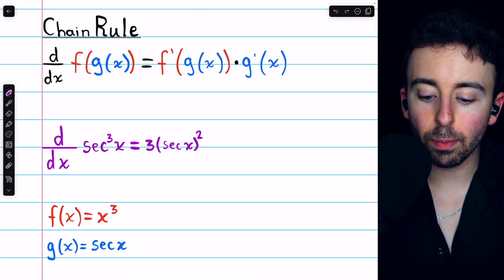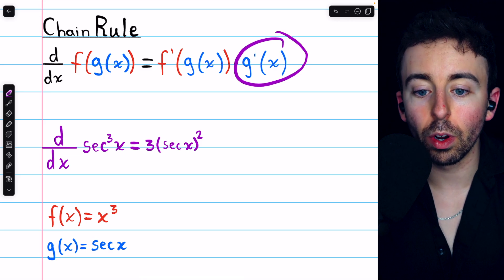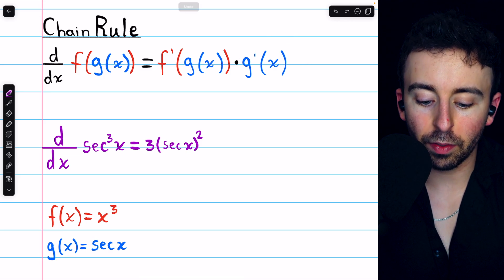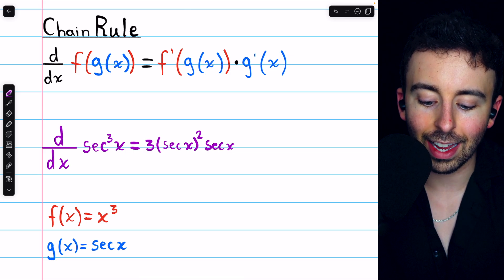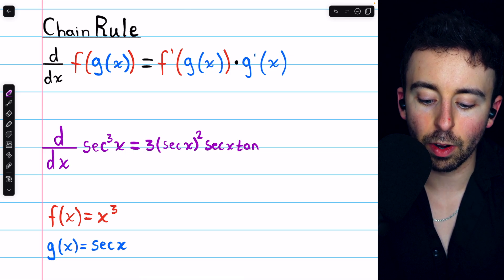Lastly, we need to multiply by g prime, the derivative of that inside function. The derivative of secant is secant tangent, so we multiply by secant tangent, and that's our derivative.